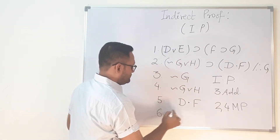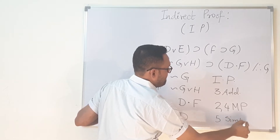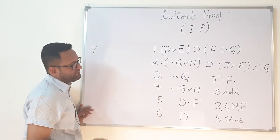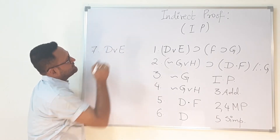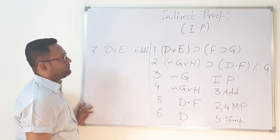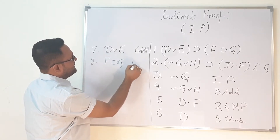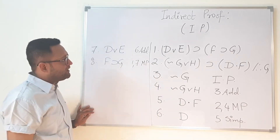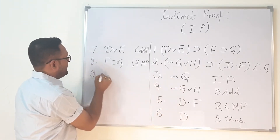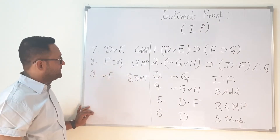On step number seven, we add E to D to get D ∨ E — step six, Addition. With step one and this step, Modus Ponens gives us F → G — steps 1, 7 Modus Ponens. Now applying negation of G on F → G using Modus Tollens gives us negation of F — this is steps 8 and 3. So we have negation of F. And from step five, using commutativity and simplification, we get F on line ten.